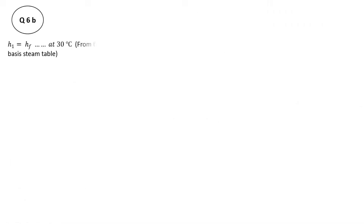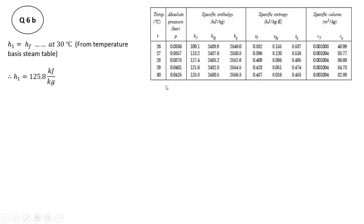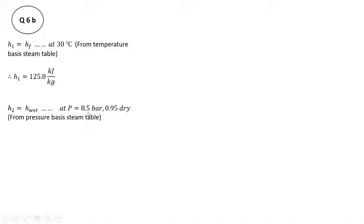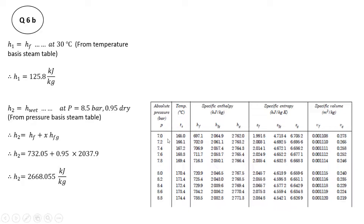Since feed water is supplied at 30 degrees centigrade, H1 is the specific enthalpy of saturated water (HF) at 30 degrees centigrade from the temperature-basis steam table. At 30 degrees centigrade, HF is 125.8 kJ per kg. H2 equals H-wet because steam is generated at 8.5 bar with a dryness fraction of 0.95. Since dryness fraction is given, it is wet steam, so we use the pressure-basis steam table to find HF and HFG at 8.5 bar.